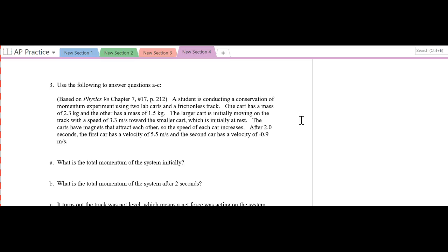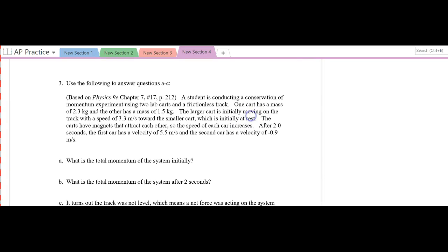The next problem is great for practicing momentum. So let's take a read. A student is conducting a conservation momentum experiment using two lab carts on a frictionless track. One cart has a mass of 2.3 kilograms. The other has a mass of 1.5. The larger cart is initially moving on the track with a speed of 3.3 towards the smaller cart. It is at rest. That's a piece a lot of people forget about, that it is at rest, so the velocity equals zero.